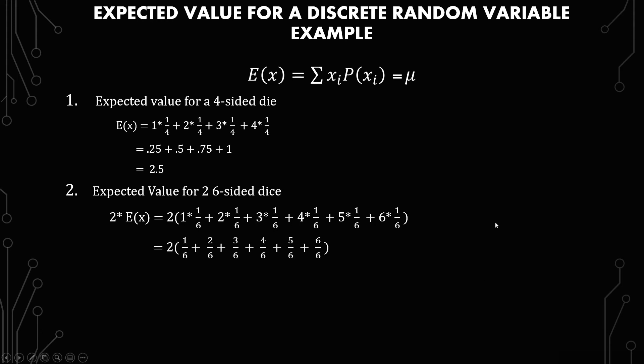Which simplifies to 2 times 1 over 6, plus 2 over 6, plus 3 over 6, plus 4 over 6, plus 5 over 6, plus 6 over 6. Or 2 times 21 over 6, which gives you 42 over 6, which gives you 7.